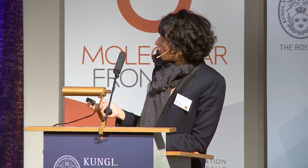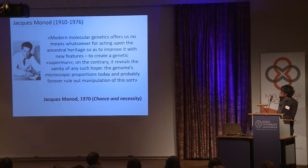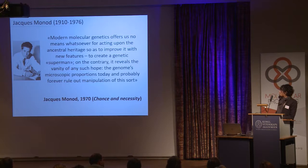Although Jacques Monod was very visionary, in 1970 he wrote a book entitled 'Chance and Necessity' where he quoted: 'Modern molecular genetics offers us no means whatsoever for acting upon the ancestral heritage so as to improve it with new features to create a genetic superman. On the contrary, it revealed the vanity of any such hope. The genome's macroscopic proportions today and probably forever ruled out manipulation of this sort.' Unfortunately he died relatively young, and I'm sure he would be very glad to hear about CRISPR-Cas9, which is really about exactly what he was studying.